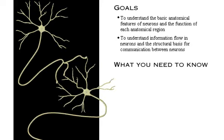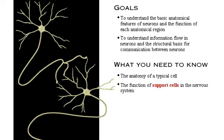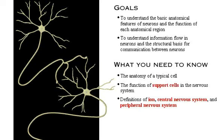Here's what you need to know: the anatomy of a typical cell, the function of support cells in the nervous system, and definitions of ion, central nervous system, and peripheral nervous system. To see definitions of terms, click the bold red words.